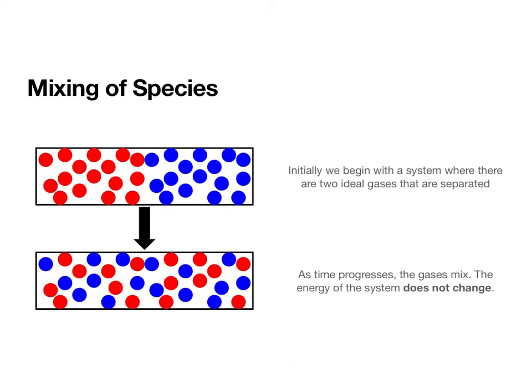Okay, so this is the thought experiment that we are working on. Initially, we begin with a system in which I really have two components. I have the red ideal gas species on one side of the container, and I have the blue ideal gas species on the other side of the container. You can think of this as a container with a barrier that is separating these two gases. But the key here is that they are both ideal gases, and initially they are separated. What happens is that we remove the barrier, and we allow the gases to combine, to mix. So as time progresses, so this arrow is the arrow of time, as time progresses, the gases mix.